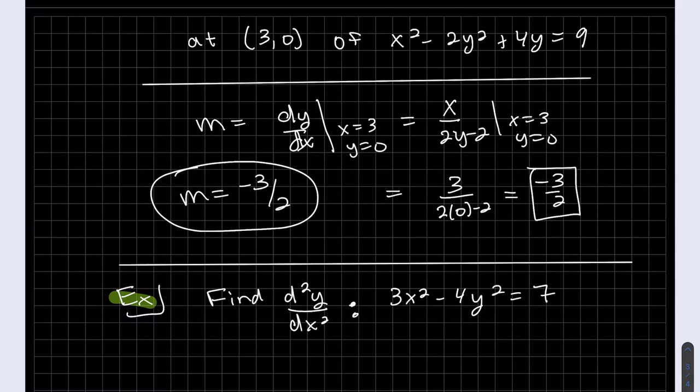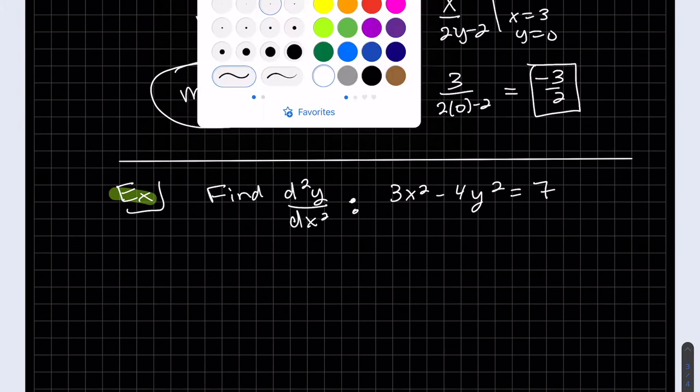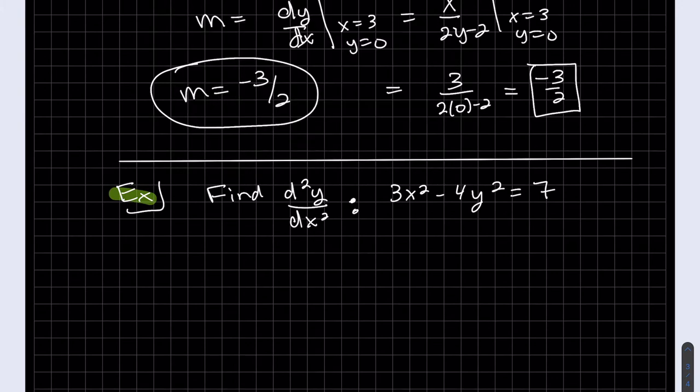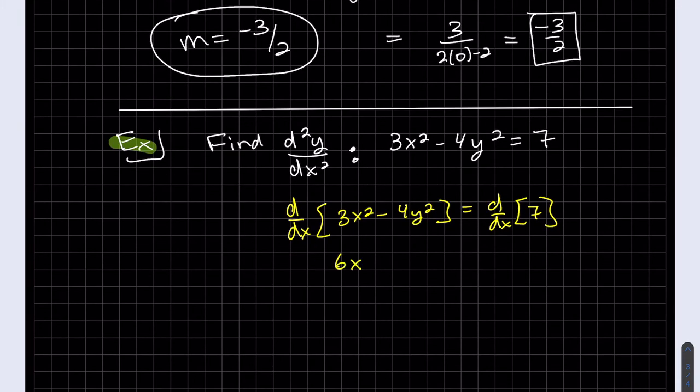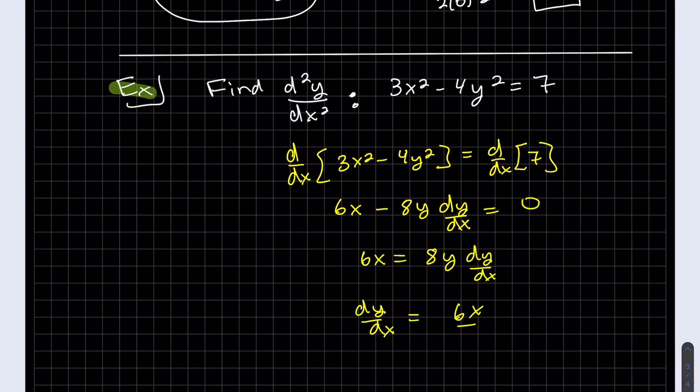Okay, so now we want to find the second derivative using implicit differentiation. We have to find the first derivative first. Again, if you want to take the chain rule, it would be dx/dx which is just one. Chain rule dy/dx because it's in terms of x, and it equals 7. That's my first derivative.